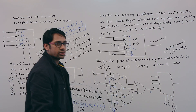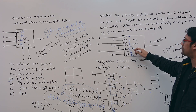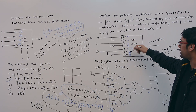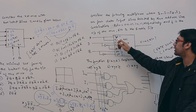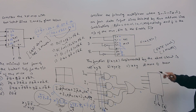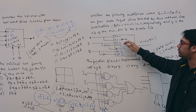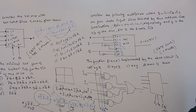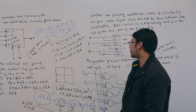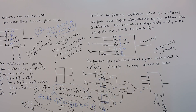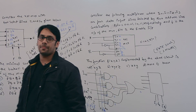This question is straightforward. You need to know the select lines, the input lines, and what an enable input does. Once you have the general multiplexer equation with enable, you substitute the given values for I0, I1, I2, I3, the select lines, and enable, and directly get the answer. The answer is option A, XYZ'. This was a 2-mark question from GATE 2002.